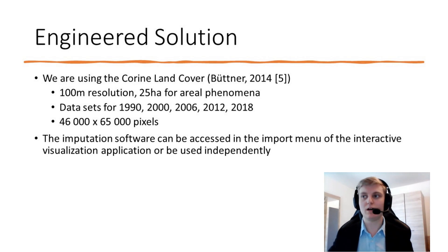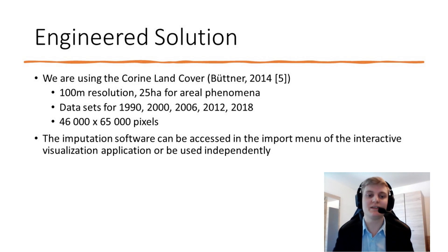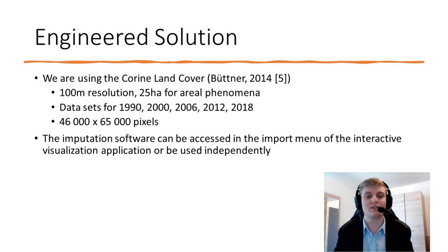Now to our actual solution. We are using the Corine Land Cover dataset, also provided by Copernicus. It is a land-use dataset with 100-meter resolution and 25 hectares for aerial phenomena. The dataset has time steps for 1990, 2000, 2006, 2012 and 2018, with an overall size of 64,000 by 65,000 pixels. The software can be used combined, such that the imputation software can be accessed from the import menu of the interactive visualization application, but they can also be used independently.